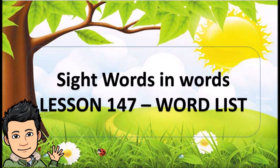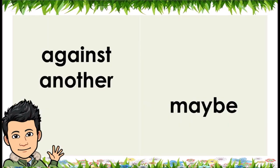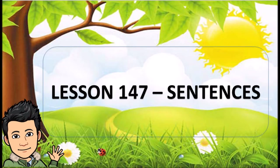Lesson 147, Word List: Sight words. Against, Another, Maybe. Lesson 147, Sentences.